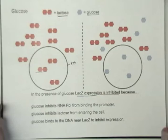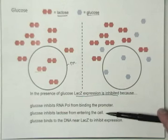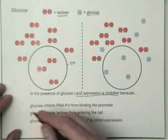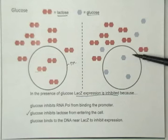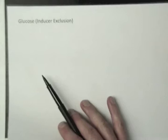Based on the image, what is the best reason for that? Is it that glucose inhibits RNA polymerase from binding to the promoter? Is it because glucose inhibits lactose from entering the cell? Or is it because glucose binds to the DNA near lacZ to inhibit expression? Well, the only statement that's really supported by the picture is that in the presence of glucose, lactose is excluded from the cell and only glucose can get in. This is referred to as inducer exclusion. The inducer for the lac operon is lactose, and exclusion means you keep it out of the cell.